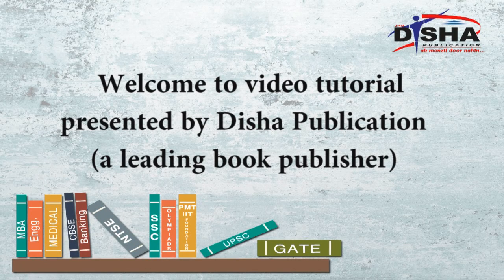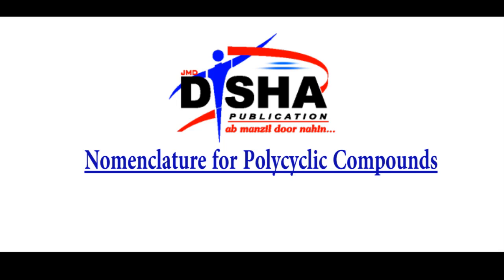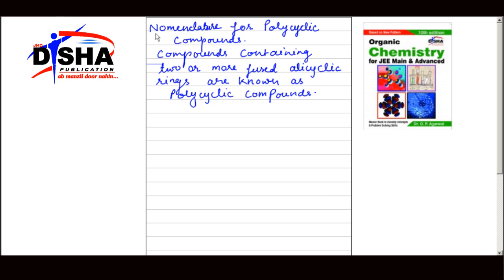Welcome to a video tutorial presented by Disha Publication, a leading book publisher. Compounds containing two or more fused alicyclic rings are known as polycyclic compounds. Let us understand the structure of polycyclic compounds with the help of some examples.